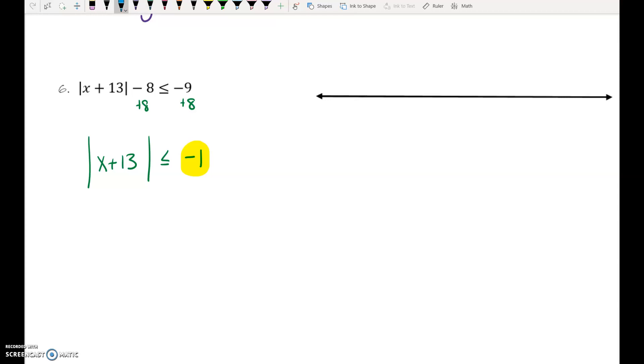Here's how I think this through. On the left side, I have absolute value. This is going to result in a positive number. Negative 1 is a negative number. Is it possible for a positive number to be smaller than a negative number? No, so this one is no solutions.